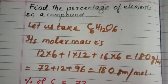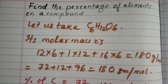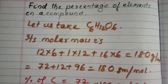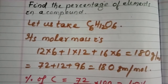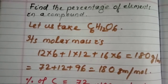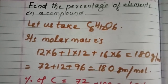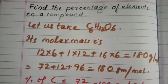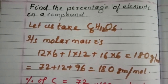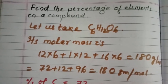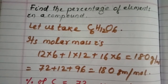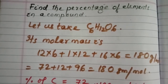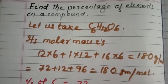Welcome back to my channel. In this video, I will discuss the percentage of different elements present in a compound. If you know the percentage of different elements in a compound, you can find its empirical formula. If you also know the molar mass, then you can find the exact molecular formula. So here you will find the relation between percentage and empirical formula. Let us start.